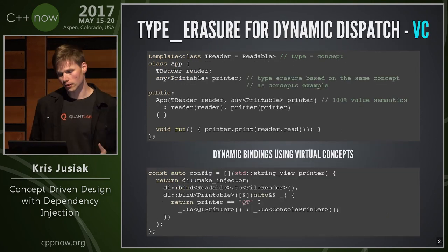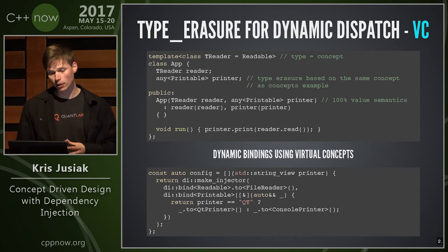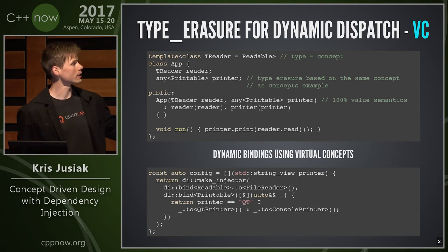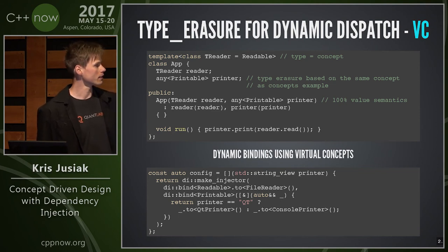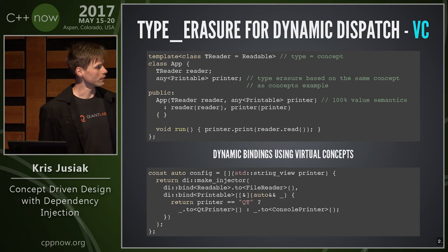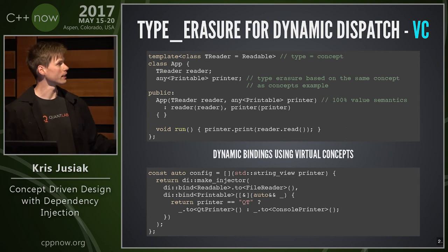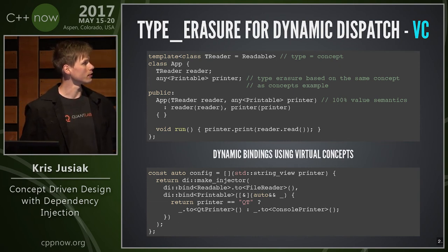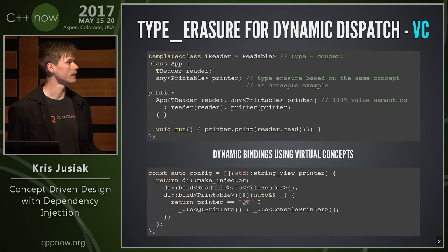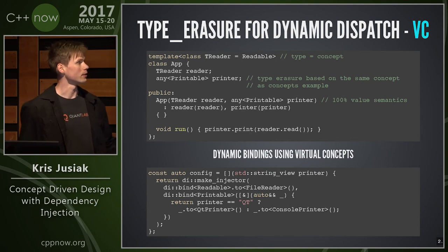But if you don't know everything at compile time, we can easily opt out with the same concept to the type erasure version. For example, instead of having 'printable' we'll put it as 'any_printable' — it's a type-erased version based on Louis Dione's library, with value semantics. At the bottom we bind it at runtime: we bind printable to a lambda and bind to a Qt printer or console printer at runtime. By default we know basically all dependencies at compile time, and it's hardly ever that we need to opt out to the runtime version.